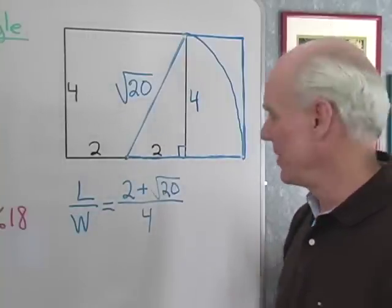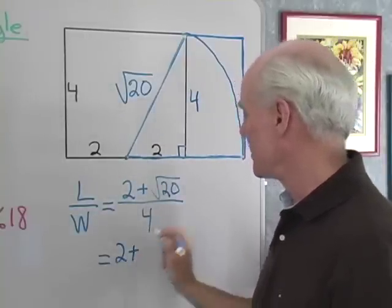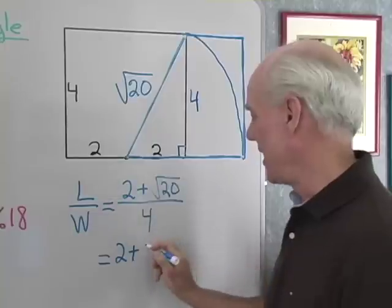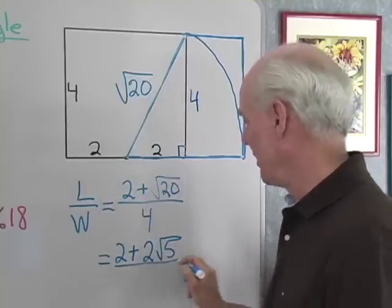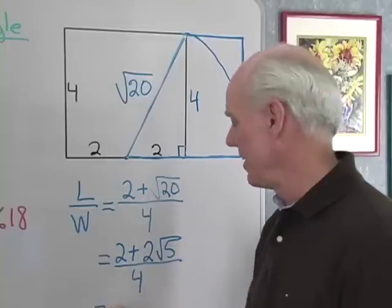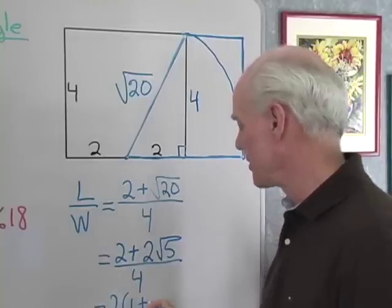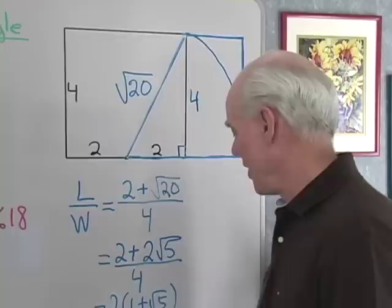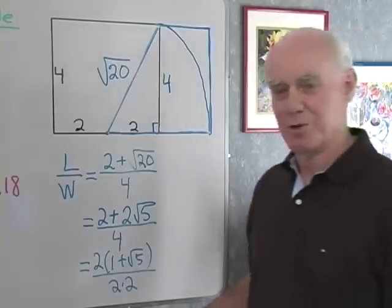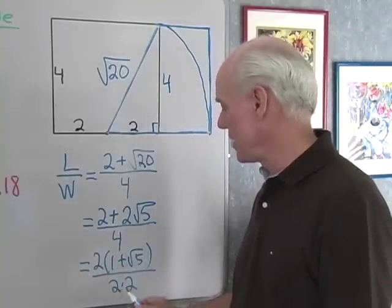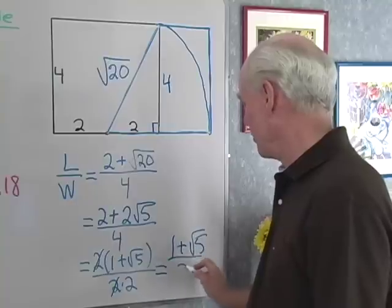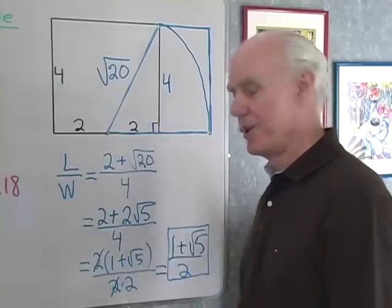This should come out to be the same as before. In simplified form: 2 plus square root of 20 — that's square root of 4 times 5 — I can take the 4 out as 2, leaving 5 inside the radical. So I have 2 plus 2√5, all divided by 4. I factor a 2 from the numerator to get 2(1 + √5), and write the denominator as 2 times 2. Those 2's divide out, and I end up with (1 + √5) / 2 — the same golden ratio I got before.